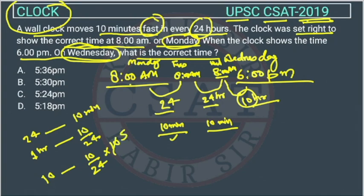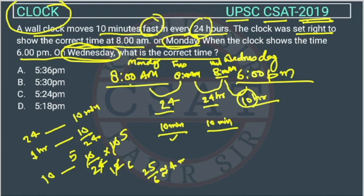Simplifying: the 10 in the numerator and 24 in the denominator cancel — 10 goes 5 times and 24 goes as 12 — giving us 25/6, which is approximately 4 minutes. So the total fast time is: 10 minutes (first 24 hours) + 10 minutes (second 24 hours) + 4 minutes (10 hours) = 24 minutes fast in total.